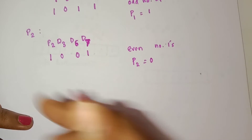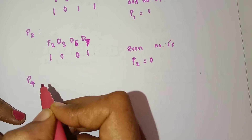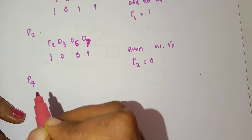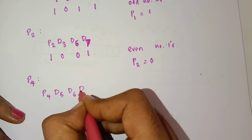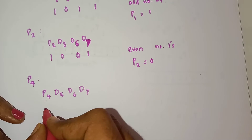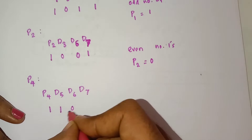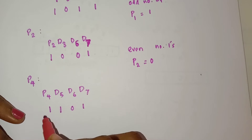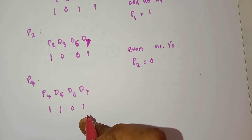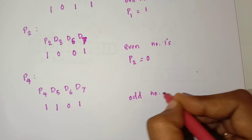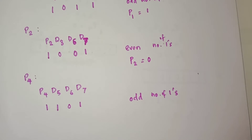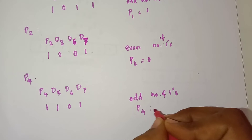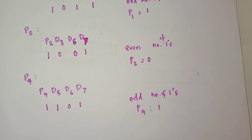Next we want to find the value of P4. For finding P4, the rule is: check 4 bits, skip 4 bits. That means P4, D5, D6, and D7 are used. The value of P4=1, D5=1, D6=0, D7=1. The number of 1s is odd, so the value of P4 result is 1, meaning there is an error in this code.